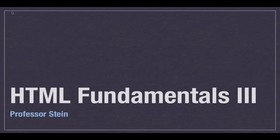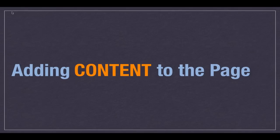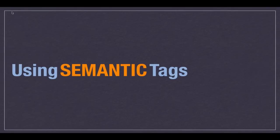This is HTML fundamentals part 3. In this part, we're going to look at actually writing the content for the page. As we do it, we're also going to keep in mind using the semantic tags — the semantic meaning for tags — so we can explain what kind of content should go in a tag. That's really what semantics is about: meaning and using the correct tag for the correct kind of content.